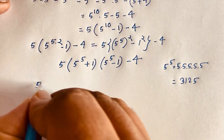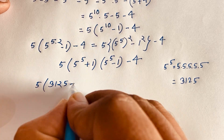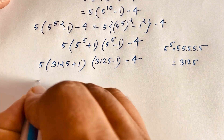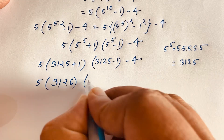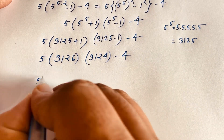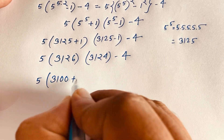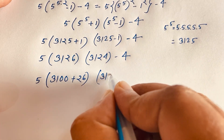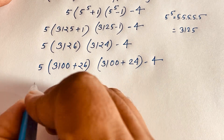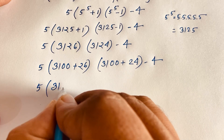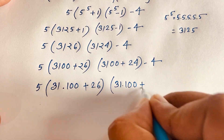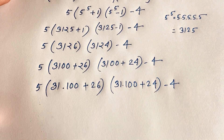Substituting 3125: 5 times (3125 + 1)(3125 - 1) minus 4, which becomes 5 times 3126 times 3124, minus 4. Now 3126 can be written as 3100 plus 26 and 3124 as 3100 plus 24, so we have 5 times (3100 + 26)(3100 + 24) minus 4.